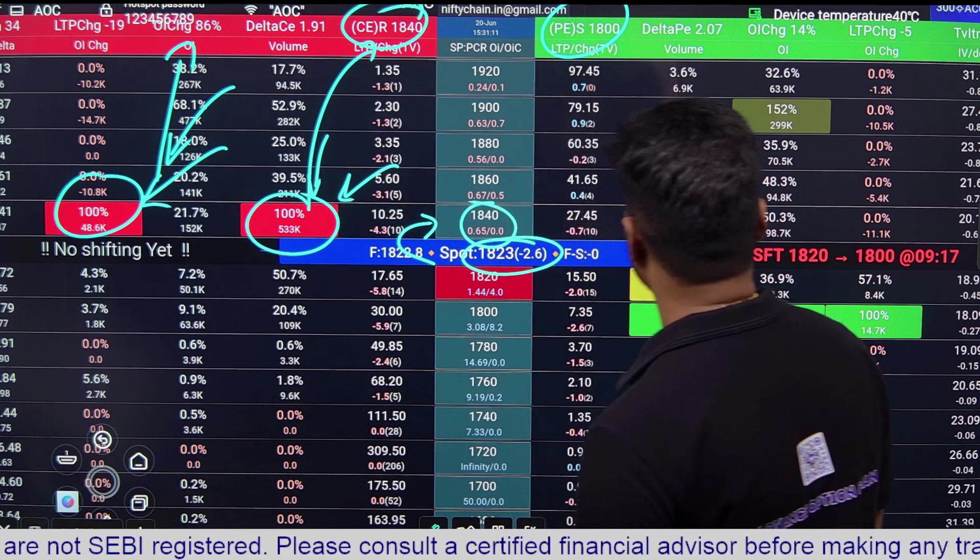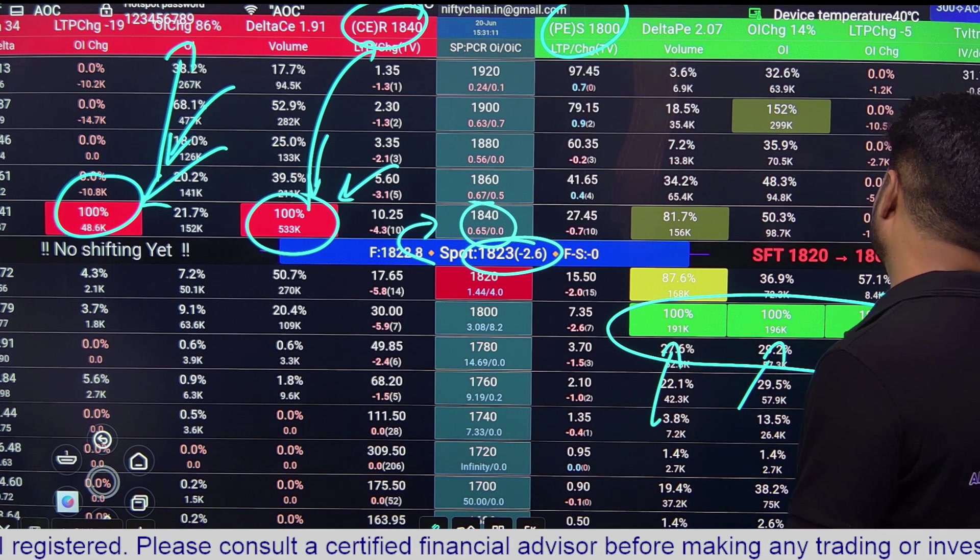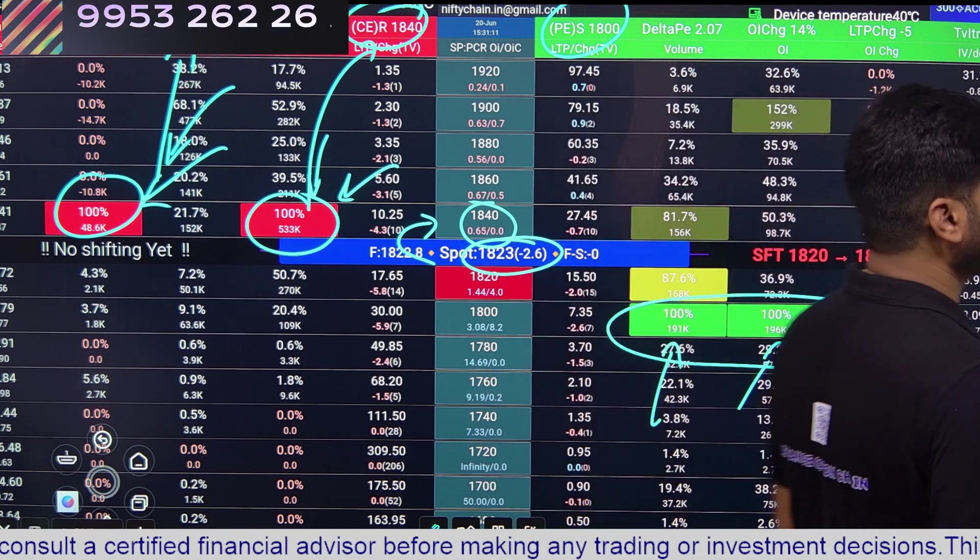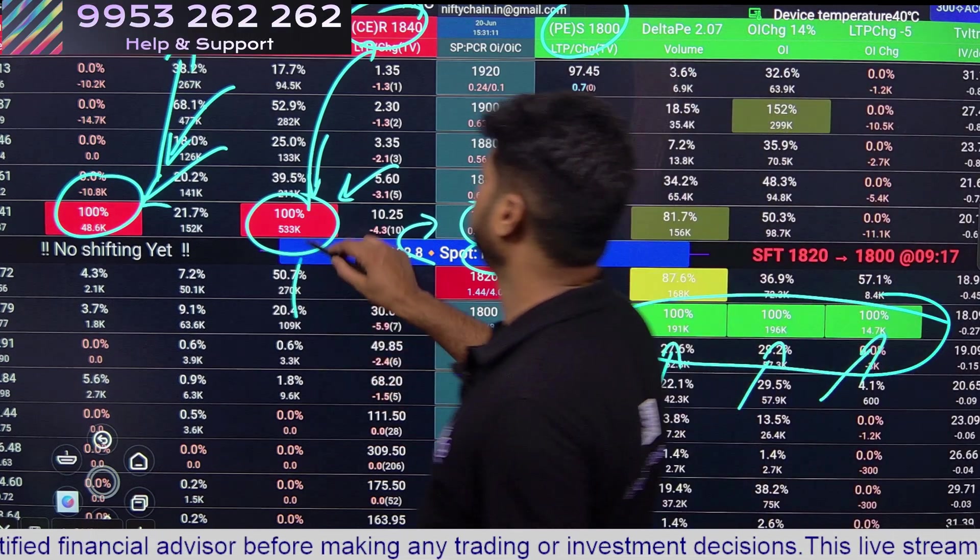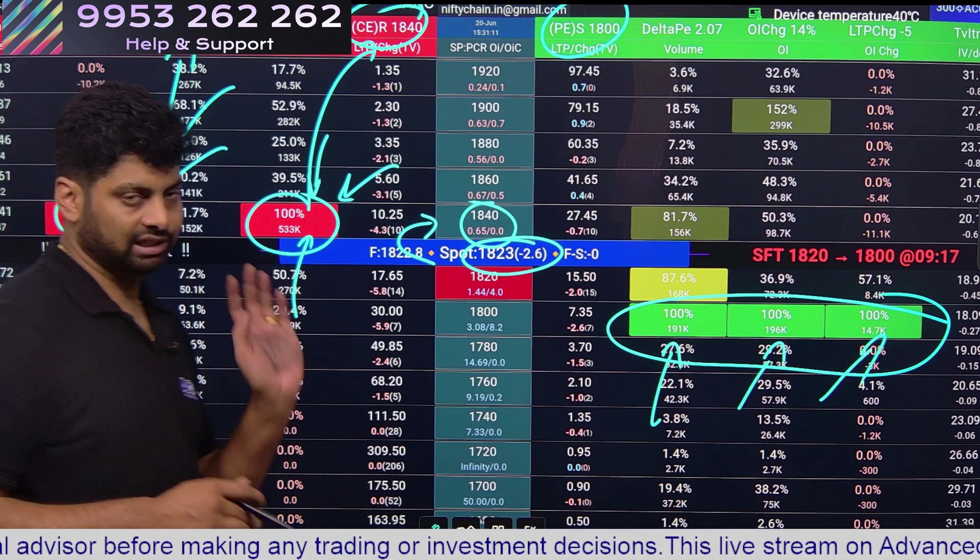Similarly for the support it says 1800, that is because of volume, OI and OI change. Please do not get confused if all three are making support that is a strong support, or if there is only volume or only OI that will be weak support. Things don't work that way.